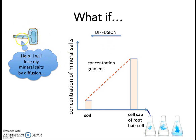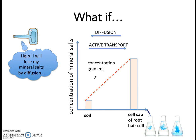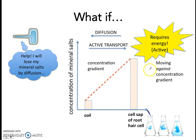So our root hair cell is going to lose his very precious mineral salts — that's very bad for him. But there is a way that he can continue to absorb mineral salts into the cell, and that is by active transport. Active transport transports the salts against the concentration gradient, and this process requires energy. That's why it's active.